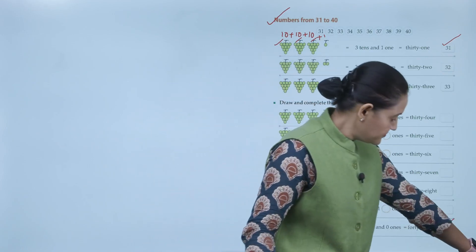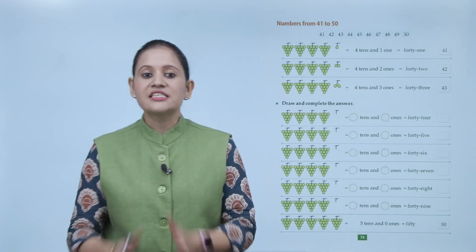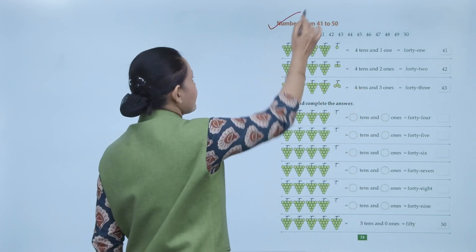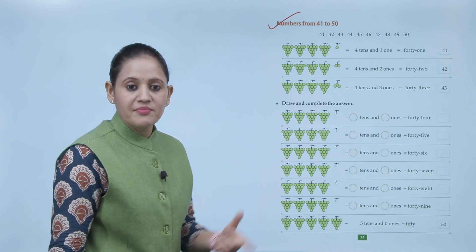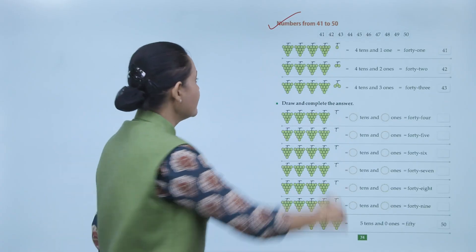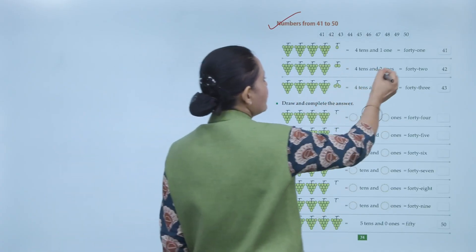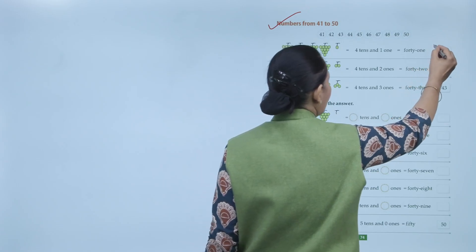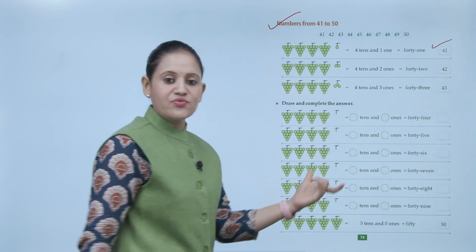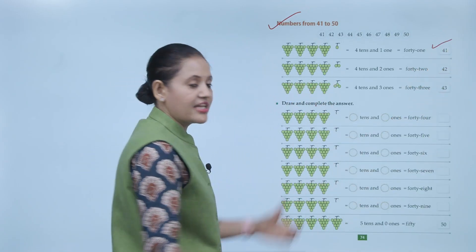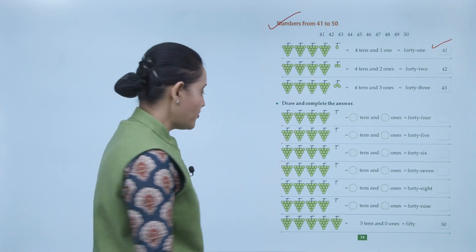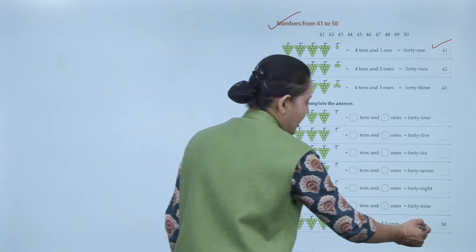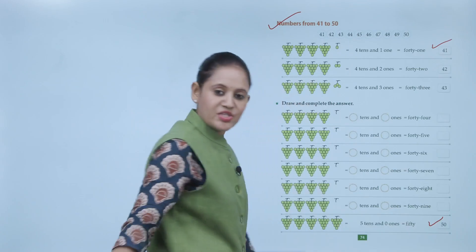Next, numbers from 41 to 50. 41 means 4 tens and 1 one — spelled F-O-R-T-Y O-N-E, written as 41. Like this we will write numbers up to 49. Then comes 50 — 5 tens and 0 ones — spelled F-I-F-T-Y, written as 5-0, which is 50.